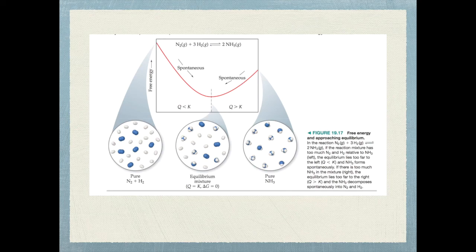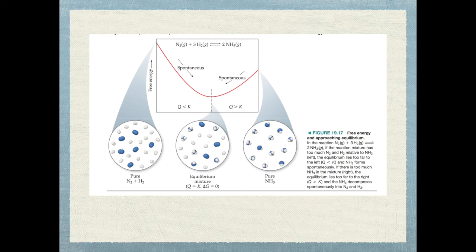This diagram shows the Haber cycle reaction. You can start with N₂ and H₂, or with NH₃. If you have excess N₂ or H₂, that reaction proceeds spontaneously until it reaches equilibrium. If you have too much NH₃, it proceeds spontaneously in the opposite direction until Q equals K, meaning you're at equilibrium. At the base of that curve — at equilibrium — your free energy change is going to be zero.